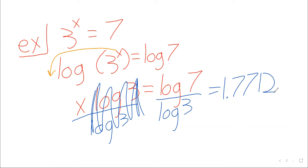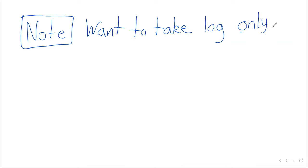All exponential equations are going to be solved basically like this. For more complicated examples, I'd like to make the note or observation that we want to take the log only of the exponential. So what does this mean?